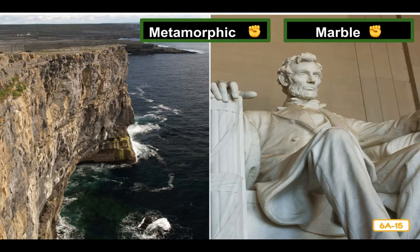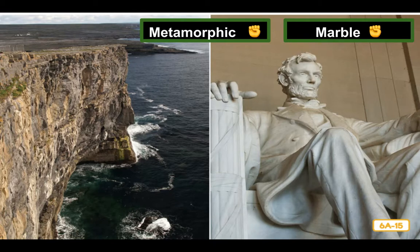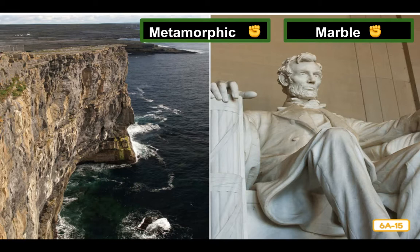If limestone is subjected to intense pressure for an even longer period of time, it can turn into another kind of rock called marble. Marble is very hard and often has a beautiful, pure white color. People have used marble for thousands of years to make fine buildings and sculptures. Marble is known as a metamorphic rock, the third and least common type of rock. Metamorphic comes from the Greek word for transformation or change. Metamorphic rocks are formed when other types of rocks undergo intense heat and pressure and change, or metamorphose, into new kinds of rocks.